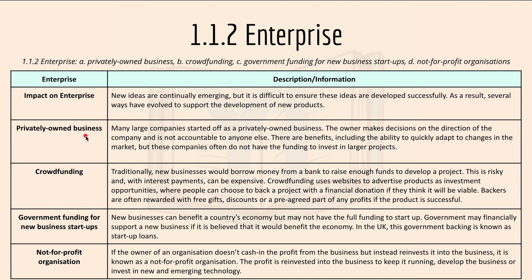For privately owned business: many large companies started off as a privately owned business, and the owner makes decisions on the direction of the company and is not accountable to anyone else. There are benefits including the ability to quickly adapt to changes in the market, but these companies often do not have the funding to invest in larger projects.